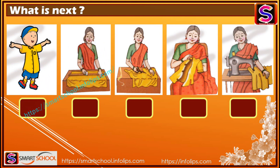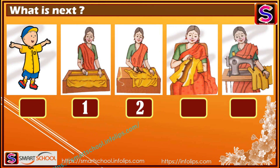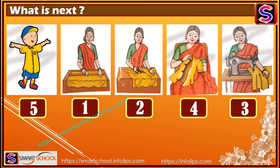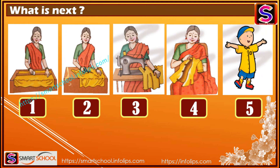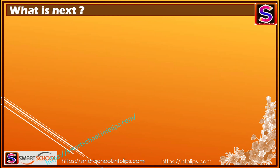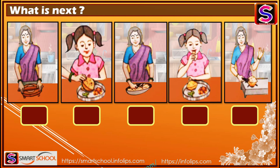First we're gonna measure the cloth, then cut it accordingly, then stitch it, and then sew on the buttons, and then we're gonna wear it. So the actual sequence is gonna be like this: one, two, three, four, and five.